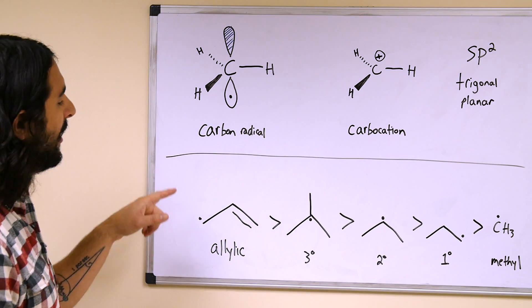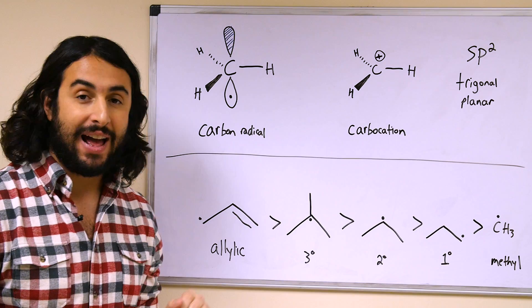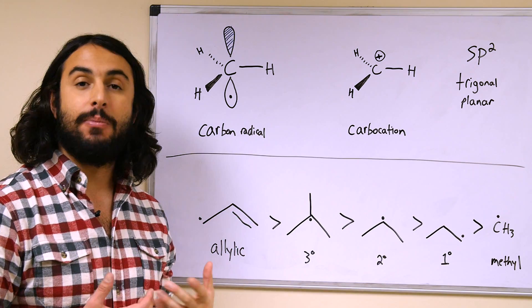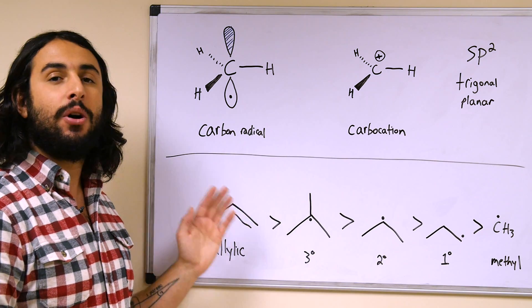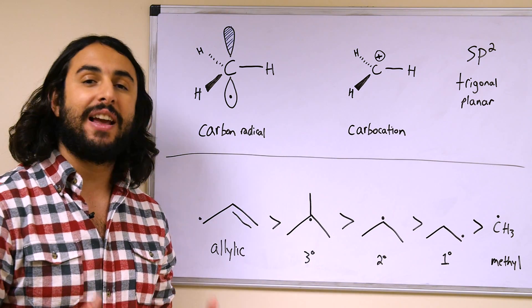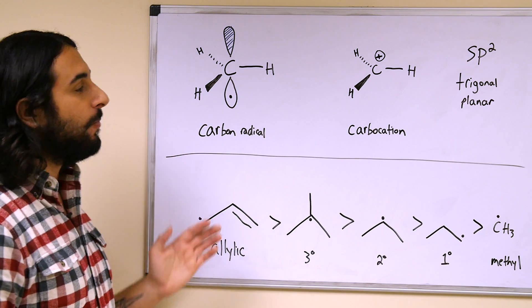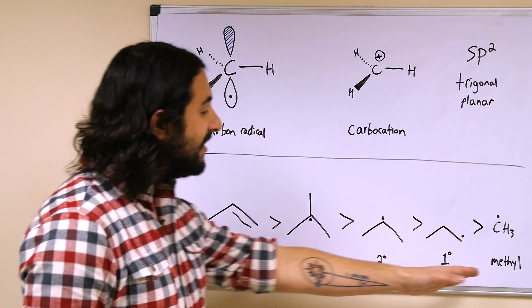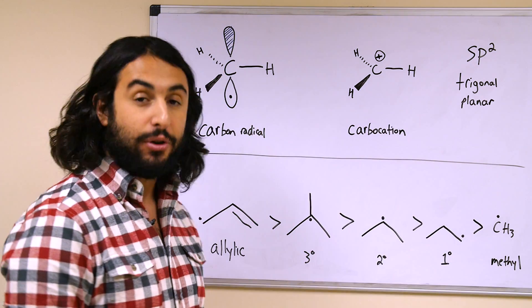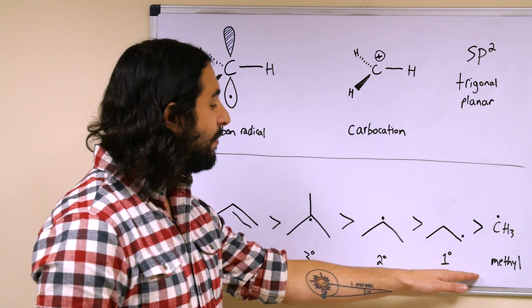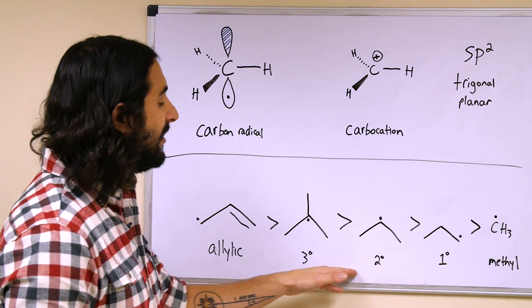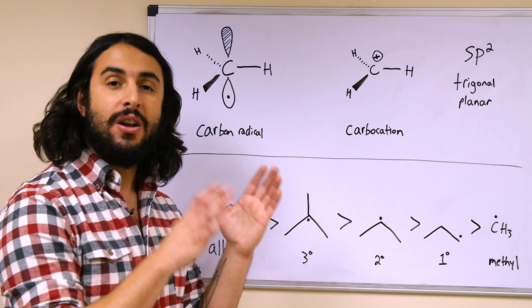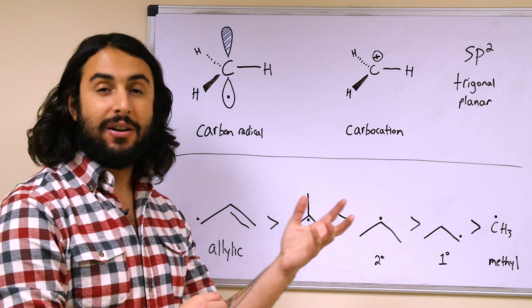And then a little bit about the stability—very similar again to carbocations. The more substituted a carbon radical is, the more stable it is, because a carbon radical, even though it is neutral, is a form of electron deficiency. So a carbon radical trend is going to very closely follow carbocation stability trend. So the least stable would be the methyl, just as the methyl carbocation would be very unstable, and then as this becomes more substituted it becomes more stable because of the hyperconjugation that is occurring from neighboring alkyl groups, just the same way neighboring alkyl groups would stabilize a carbocation.